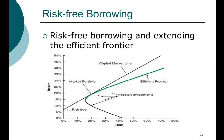We recommended that we only invest in portfolios that lie along the efficient frontier, because you will get the highest possible return at any level of risk when investing along the efficient frontier. Any portfolio along the efficient frontier is a well-diversified portfolio. What we're going to add now is the ability to borrow and lend at the risk-free rate.